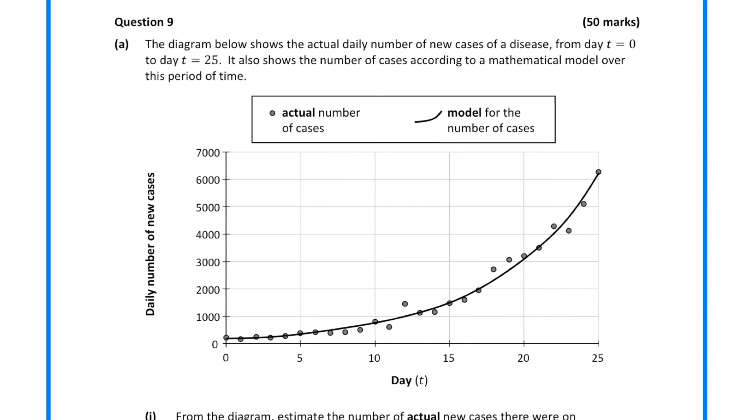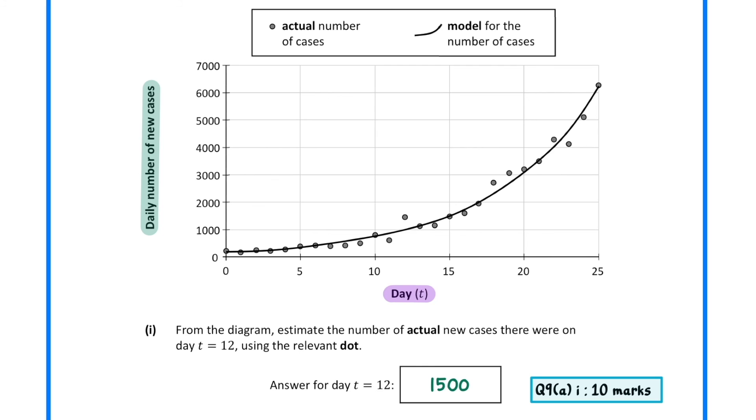In question 9a, we are given a graph comparing t, the time in days, with the daily number of new cases of a disease. The actual number of cases are represented with dots, and a model for the number of cases is represented by a smooth curve. In part 1, we must estimate the actual number of cases when t equals 12 using the relevant dot. Well, this dot represents day 10, so this dot will represent day 11, and this dot will represent day 12. The number of cases at this dot is approximately 1500.